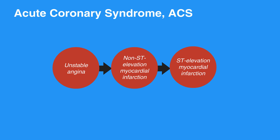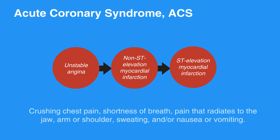ACS is classically recognized by one or more of these symptoms: crushing chest pain, shortness of breath, pain that radiates to the jaw, arm or shoulder, sweating, and/or nausea or vomiting.